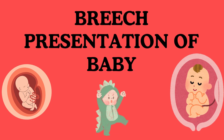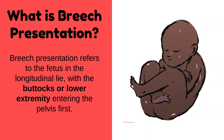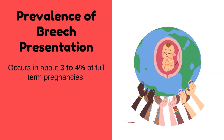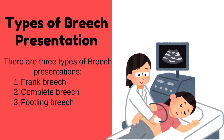In this video we will talk about an important abnormality of pregnancy known as breech presentation of baby, and also discuss its types. Breech presentation refers to the fetus in the longitudinal lie with the buttocks or lower extremity entering the pelvis first. Prevalence: breech presentation occurs in about three to four percent of full-term pregnancies. There are three types of breech presentations: frank breech, complete breech, and footling breech.